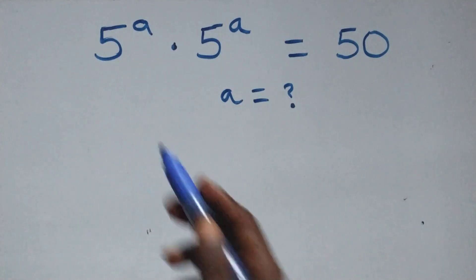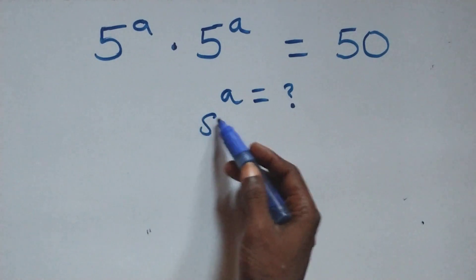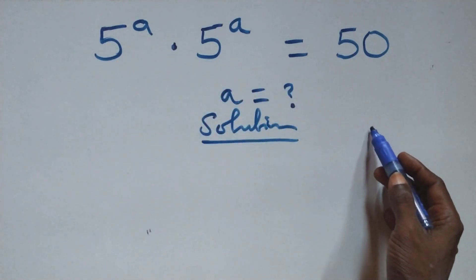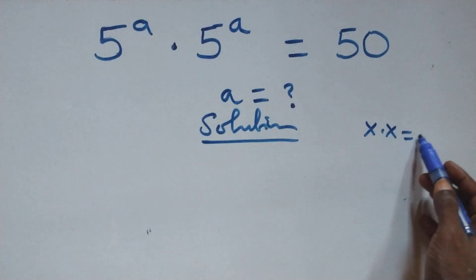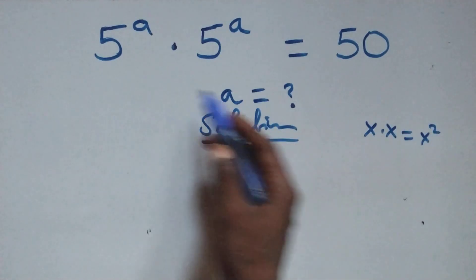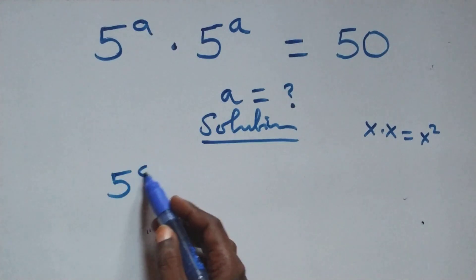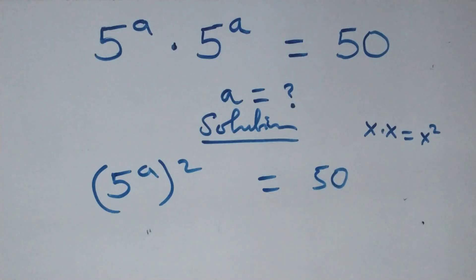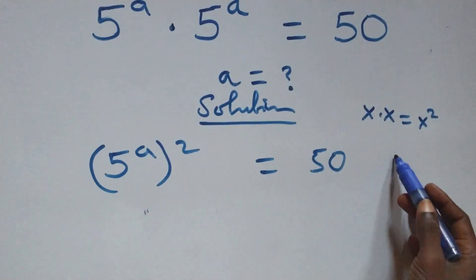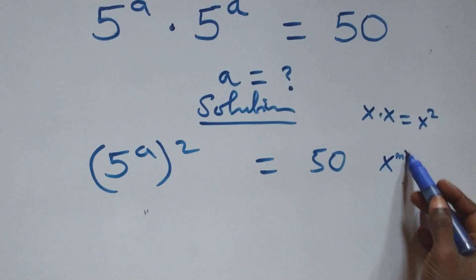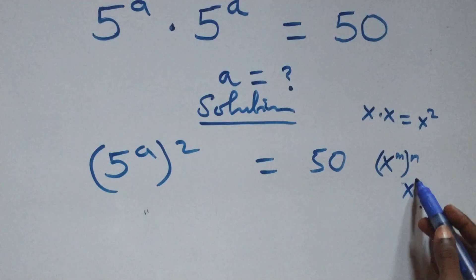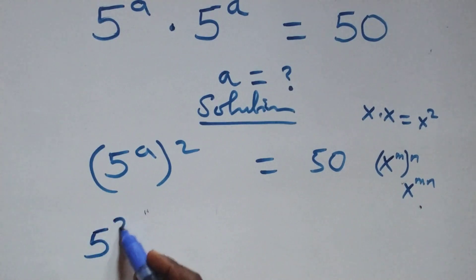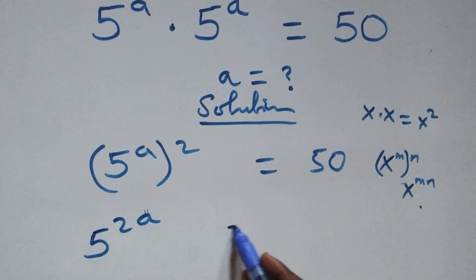Hello, welcome. How to solve this nice exponential equation. What we have here: when we have x multiplying x we can write it as x squared. We have 5 raised to the power x squared equals 50. This follows when we have x raised to power n, raised to power n, giving x raised to power m times n. So the powers multiply and we have 5 raised to power 2x equals 50.